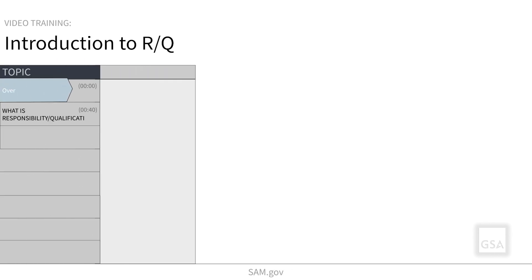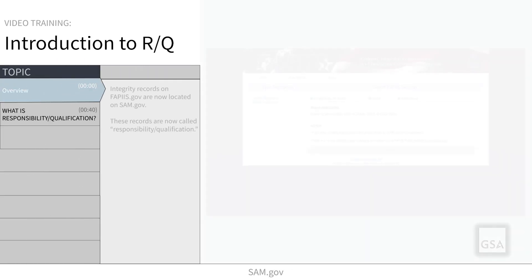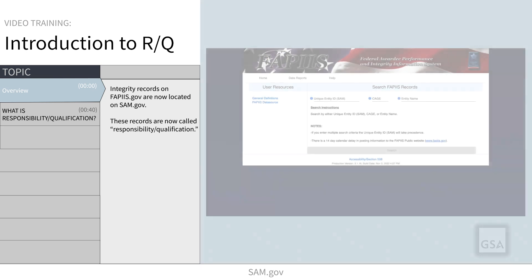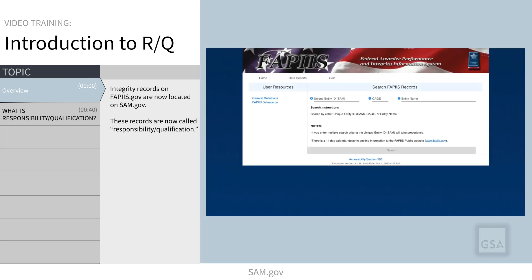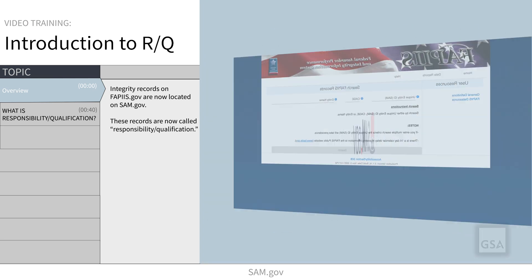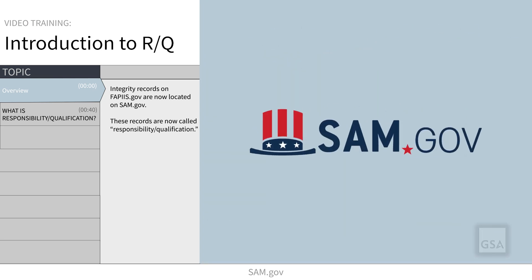Did you use FAPIS.gov to view integrity records? Now, the records you have viewed on FAPIS.gov are on SAM.gov.